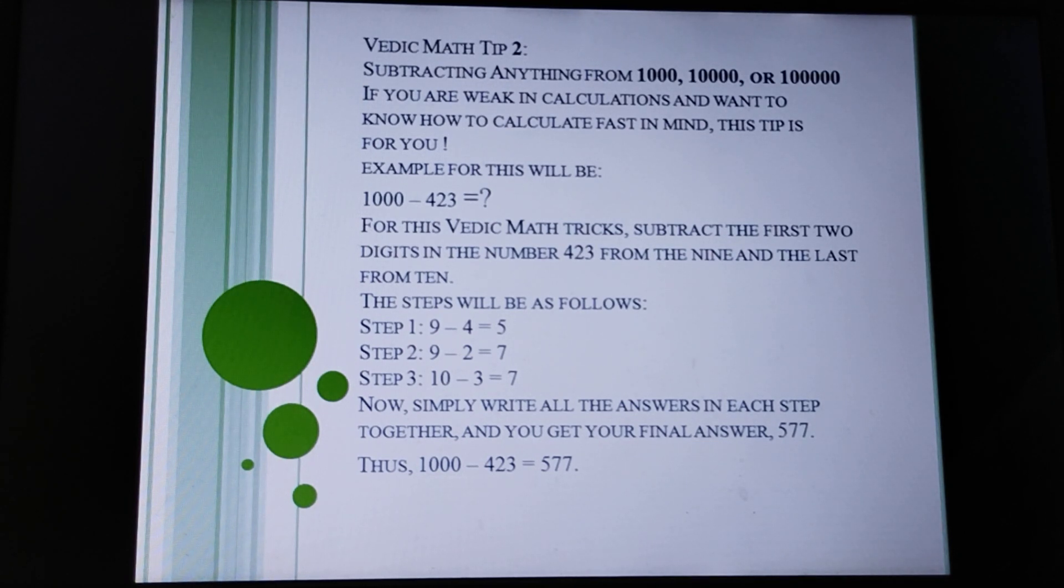Let's take an example: 1000 minus 423. For this Vedic math subtraction, subtract the first two digits of the number 423 from 9 and the last digit from 10.